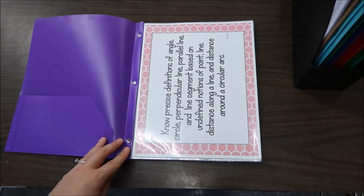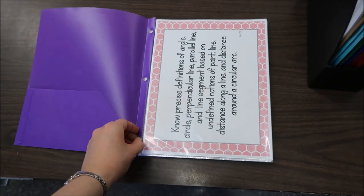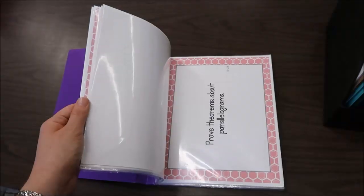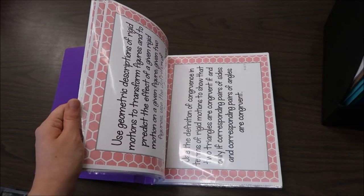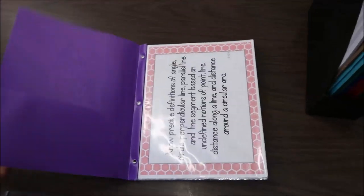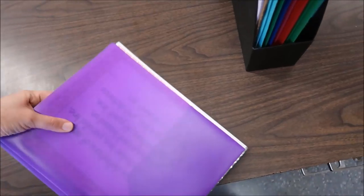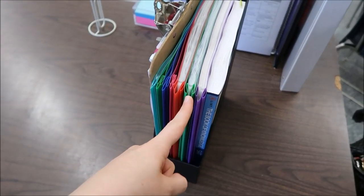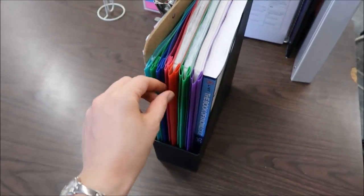What I love about the pronged folders is putting sheet protectors in the prongs and then it will hold different papers for me. So the purple folder holds my geometry standards. The green folder holds my SAT prep standards.